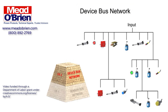The device bus network is similar in function to the sensor bus network, but works on a larger scale, connecting many sensors and actuators together. The device bus network also connects equipment to variable speed drives and motor control centers that allow for control of individual elements in the network.